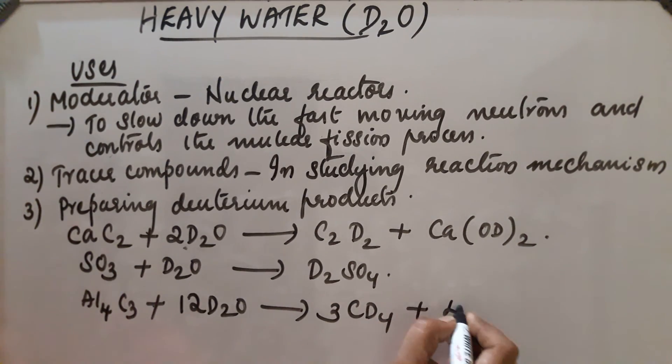The products are 3CD4 plus 4Al(OD)3. These are the different deuterium products obtained. These are the different uses of heavy water.